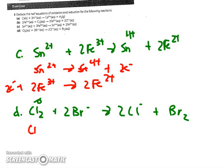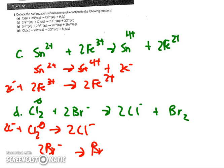And finally, D: Cl2 elemental has no oxidation number, it becomes 2Cl minus, so this is the more positive side gaining two electrons, whereas the 2Br minus ion is becoming elemental bromine and losing the two electrons.